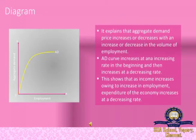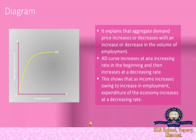This diagram shows the ADF explanation. It explains that aggregate demand price increases or decreases with an increase or decrease in the volume of employment. The aggregate demand curve increases at an increasing rate in the beginning and then increases at a decreasing rate. This shows that as income increases, employment increases. When employment increases, aggregate demand increases, but the expenditure of the economy increases at a decreasing rate.